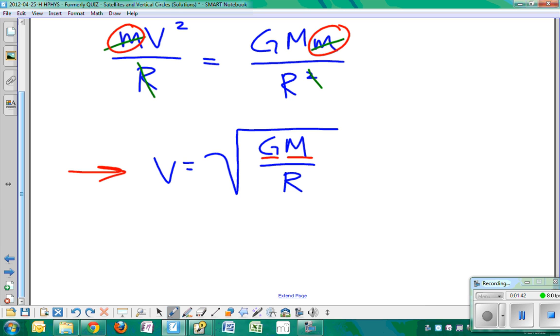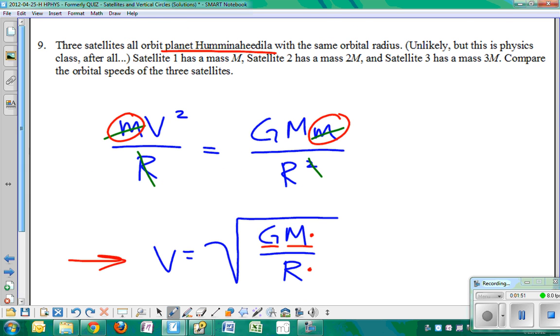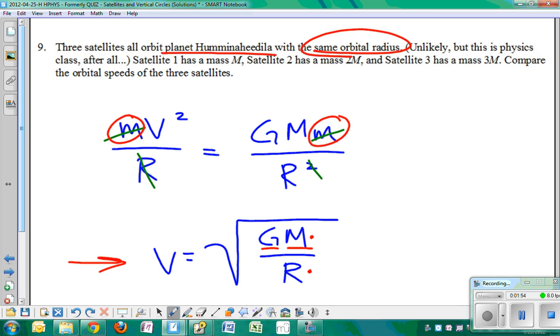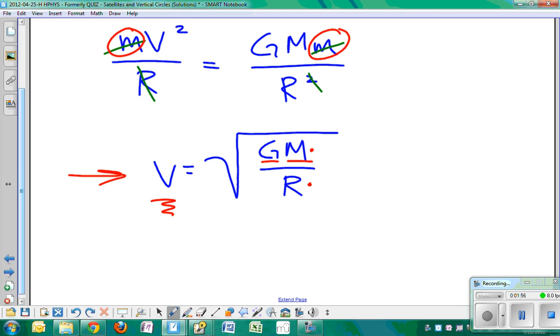So the velocity is simply a function of the mass of the thing that's being orbited, the planet Hamanhidala, and the radius of the orbit. Since they all have the same orbital radius, they all have the same velocity, independent of the mass of the object.